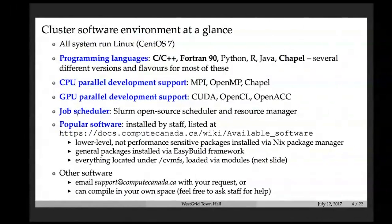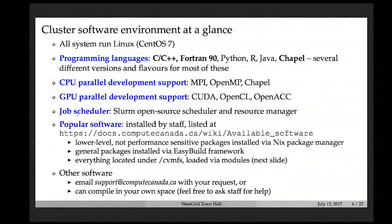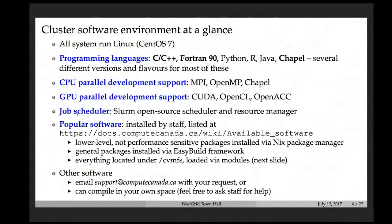For CPU parallel development, we provide MPI for distributed-memory parallel codes and OpenMP for shared-memory codes. For GPU parallel development, we provide CUDA and OpenCL. Cedar and Graham have new GPUs that fully support the latest CUDA. OpenACC is also available through the PGI commercial compiler. For job scheduling, we use SLURM, the open-source scheduler and resource manager.